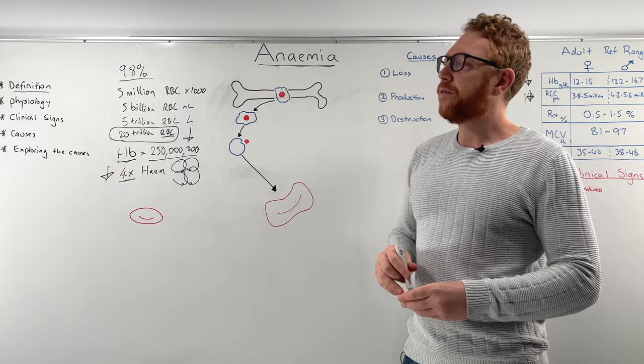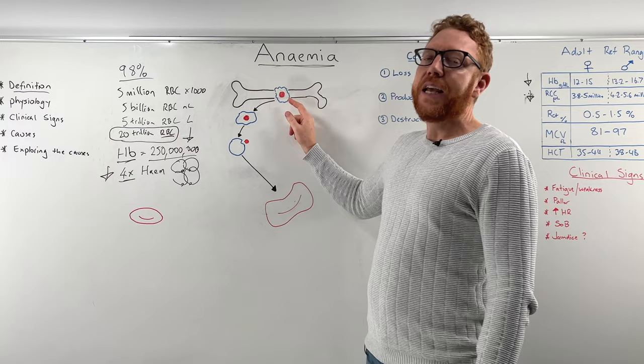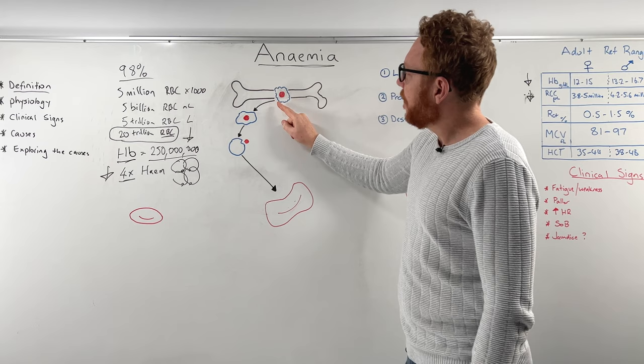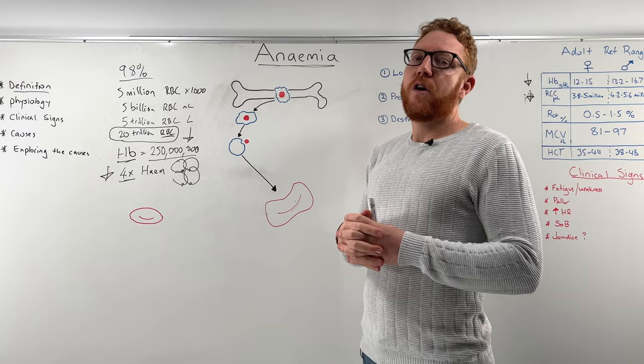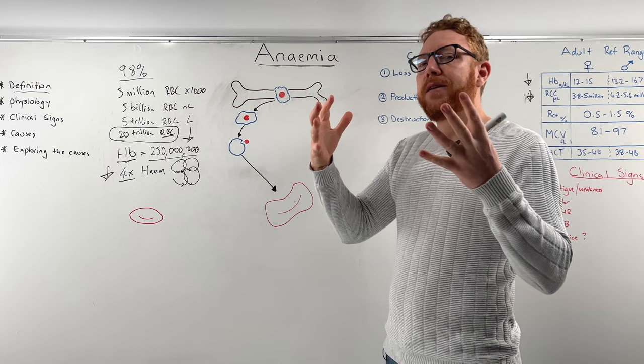Let's move to the physiology — how do we make these red blood cells? Bones are the location in our body where we make red blood cells and all blood cells. The red marrow in bones is where we do so. Here we have a special group of stem cells called hematopoietic stem cells. These stem cells can make all the lineages of blood cells — white blood cells, platelets, and red blood cells. They are what we call pluripotent; they can make a lot of things.